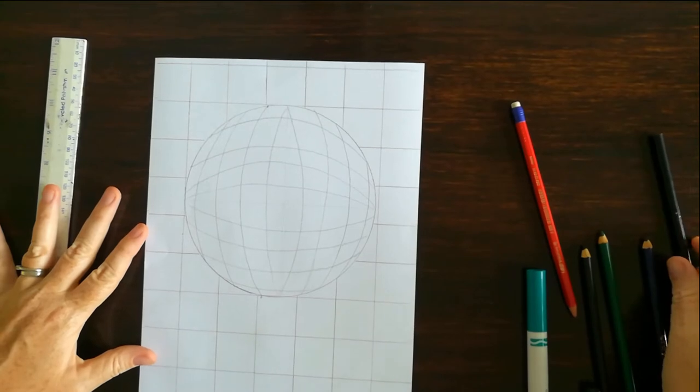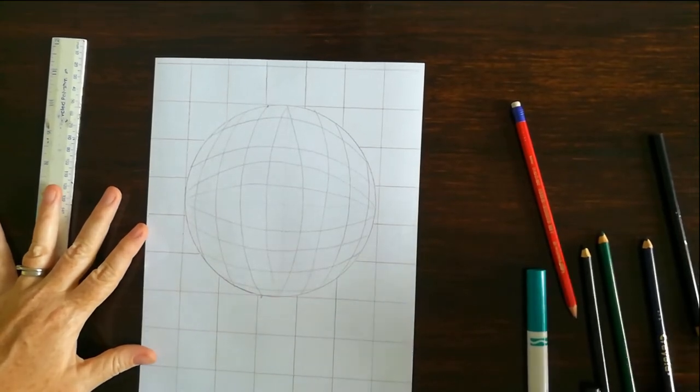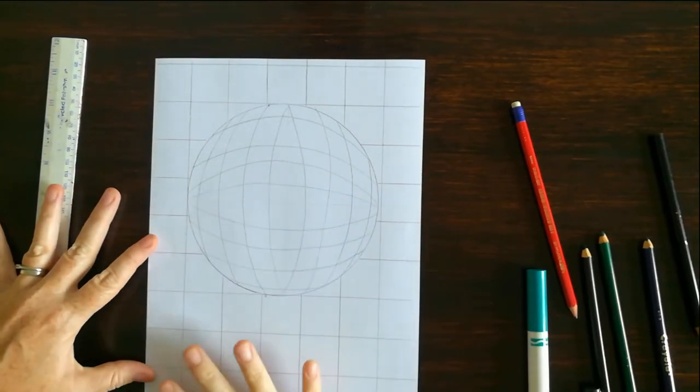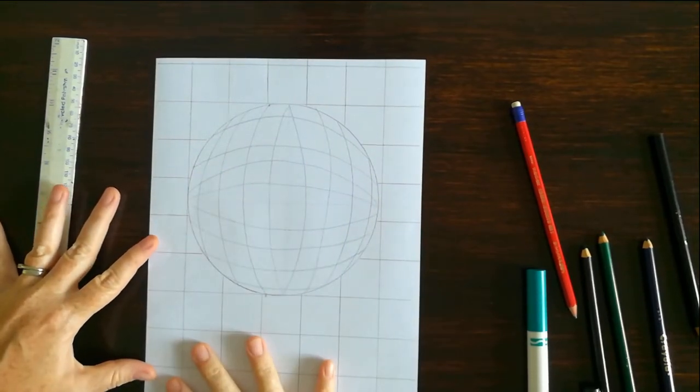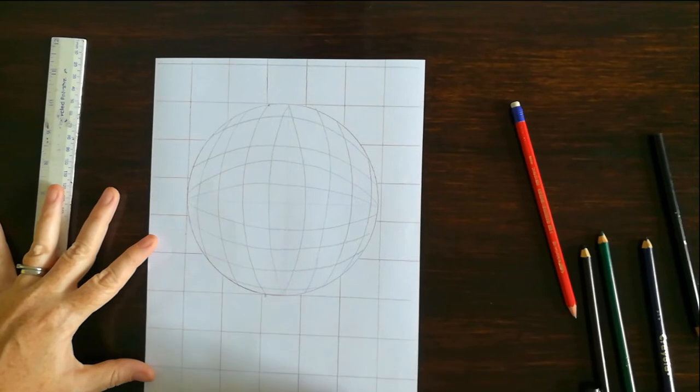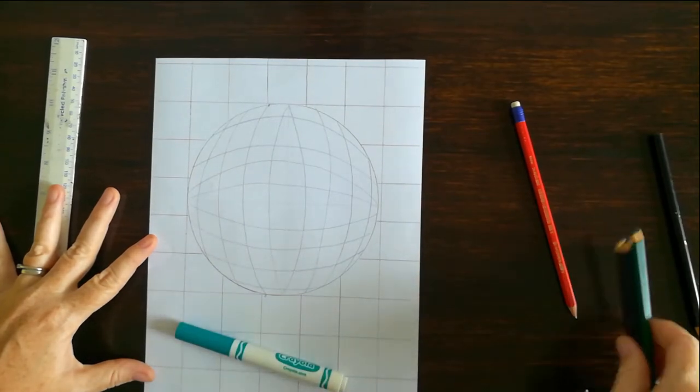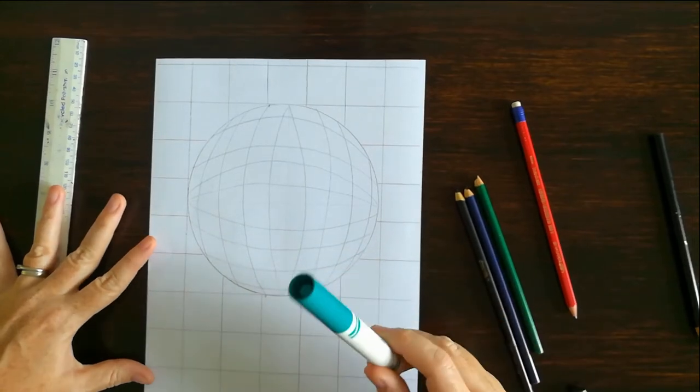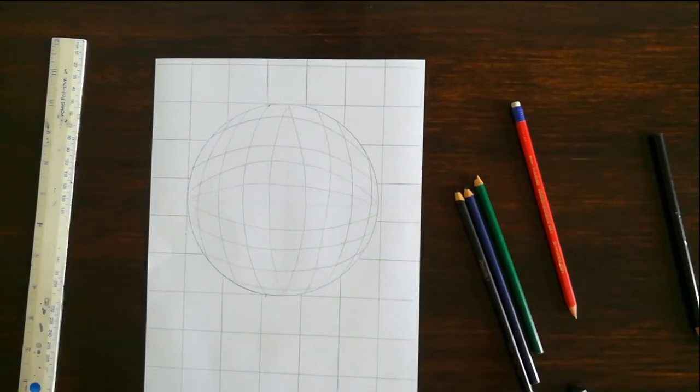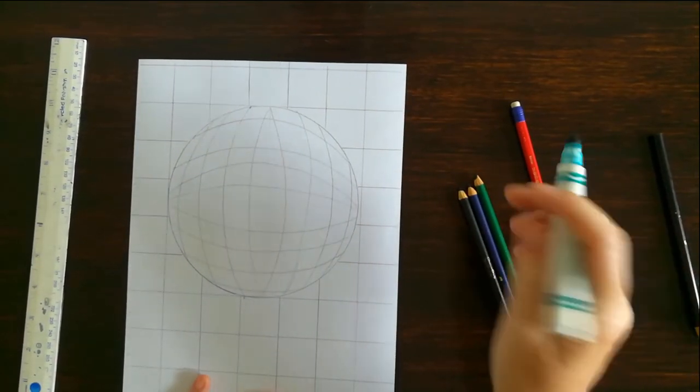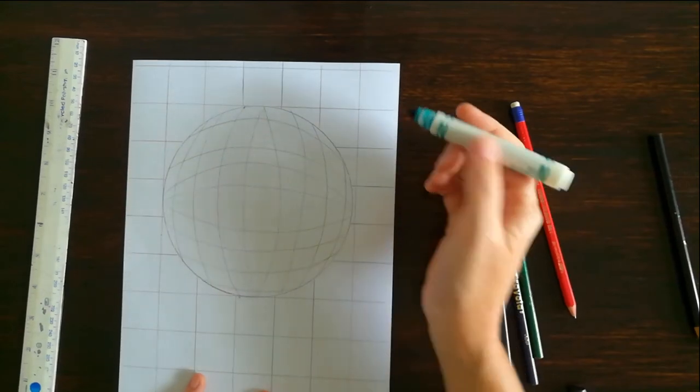So what we're going to do next is you are going to choose what you want to use to color in your optical illusion. And what you're going to do is you're going to color every other. So I think I'm going to use a marker. I'm a little bit, I think that colored pencil would look really nice, but it would also take a while. So I'm going to use a marker. And what I'm going to do first is I'm going to put a dot in every other square. And I'm going to be super careful and slow so that I know which squares I'm supposed to color.